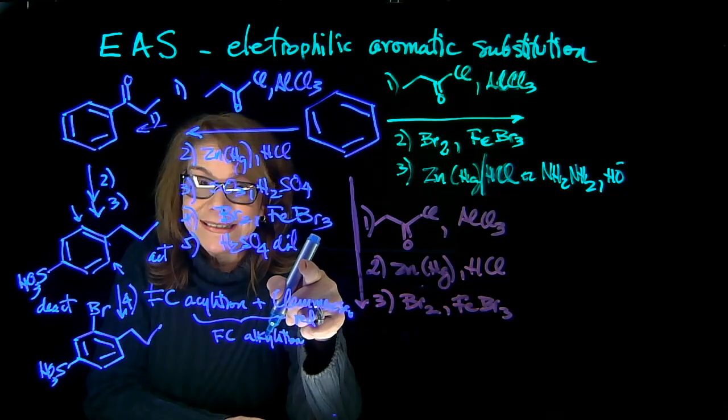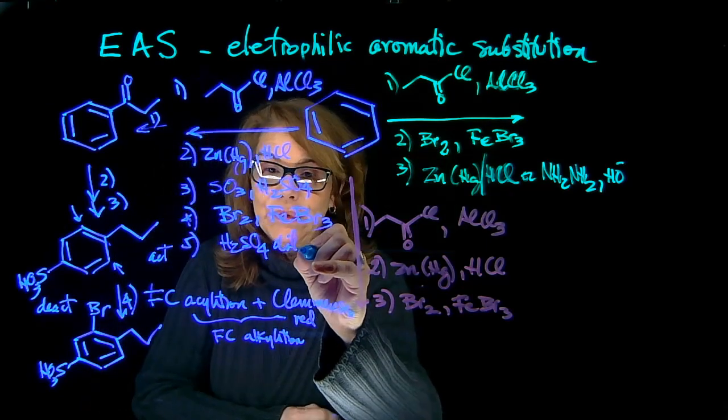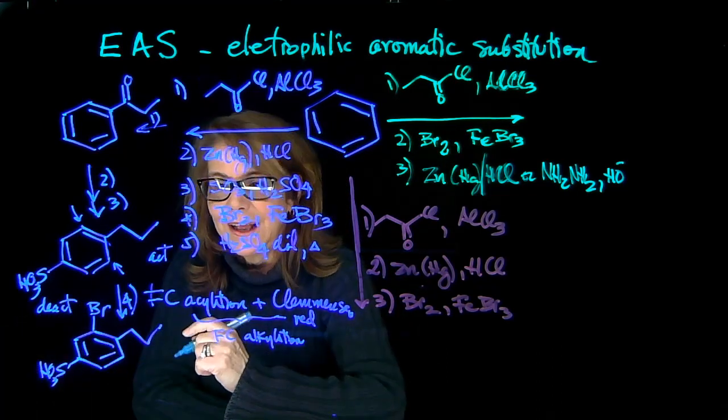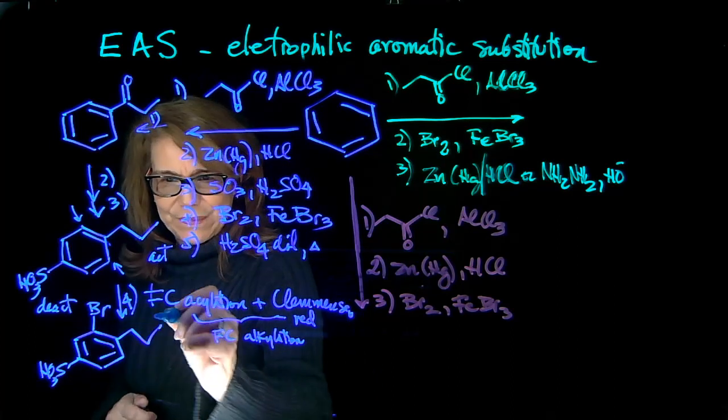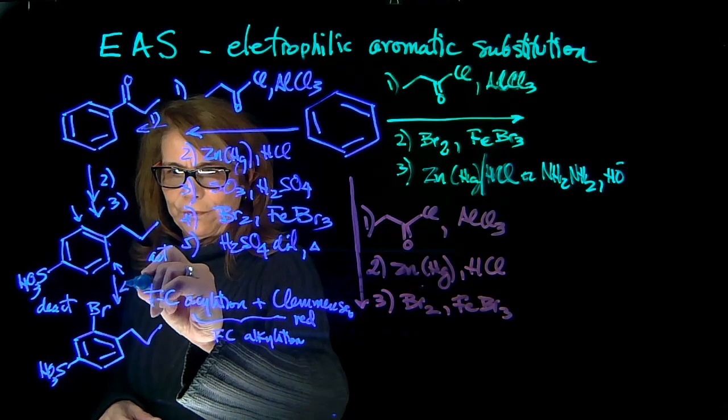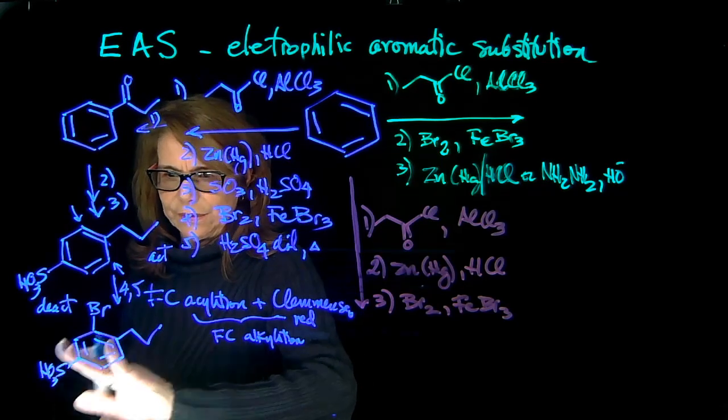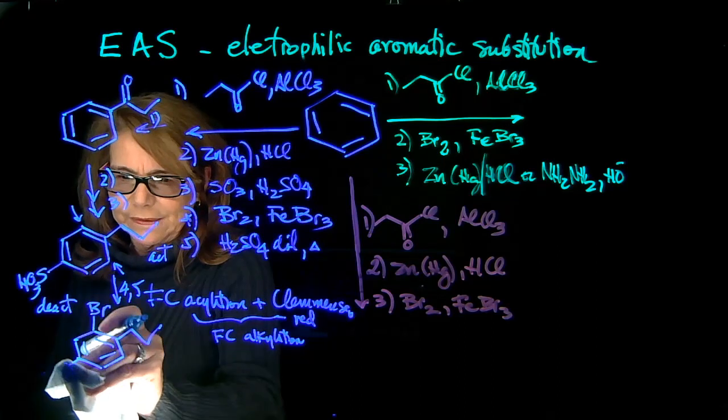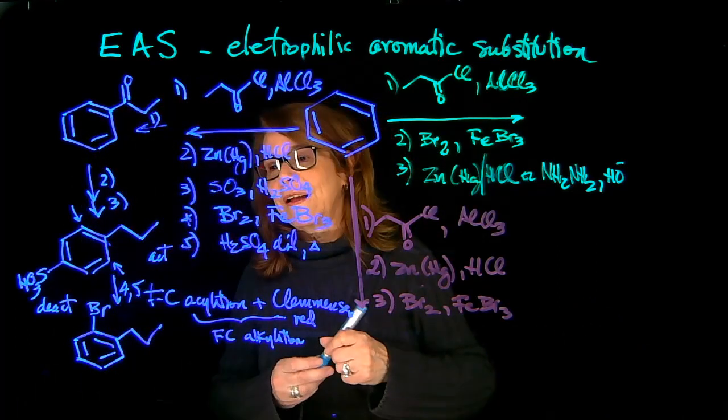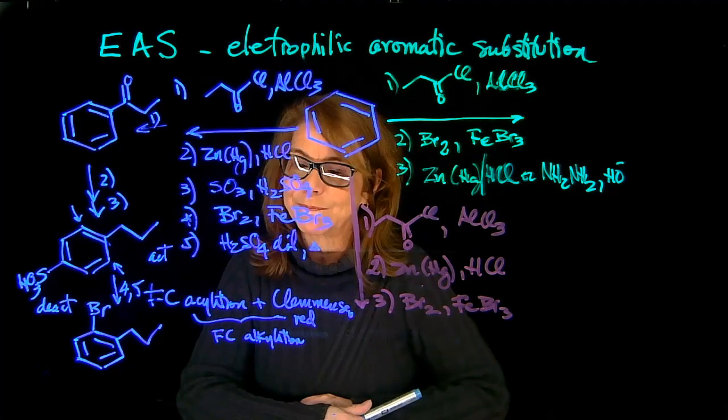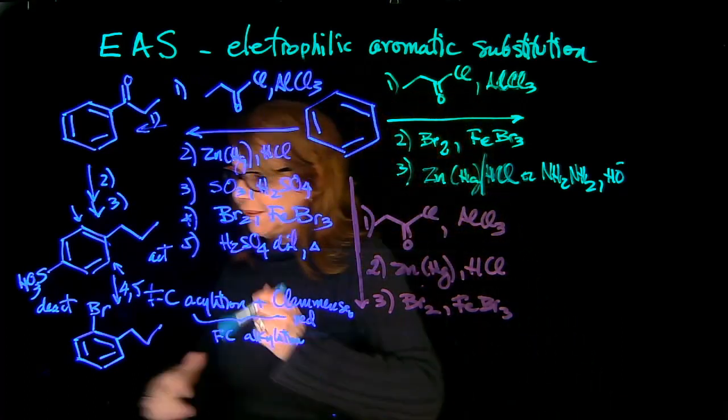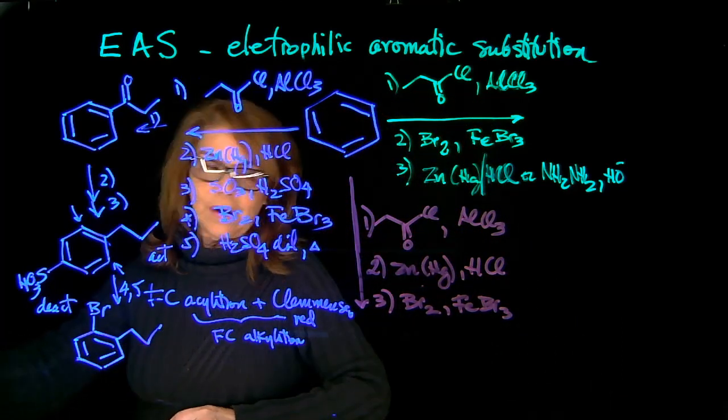The last step is a desulfonation. Here typically we use diluted sulfuric acid and heat, and what we're doing is removing that. So what I'm going to do to save space, I'm going to say that step four and five, and I'm going to remove the sulfonic acid. So in four, you have installed the bromine, and in step five, you remove the sulfonic acid. Now let's go to this side and see what happens when we change the order of the reagent.